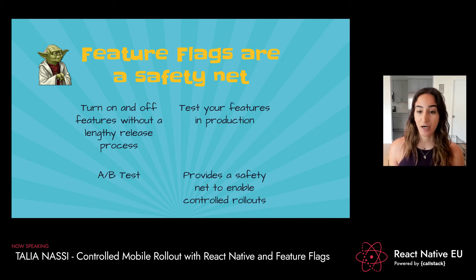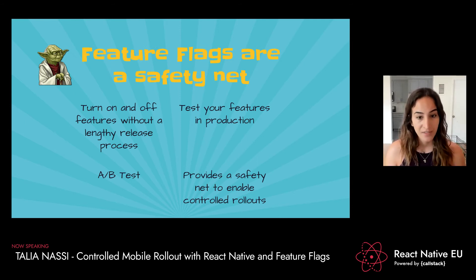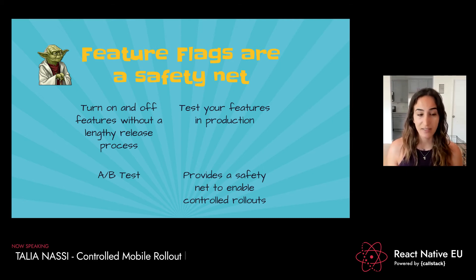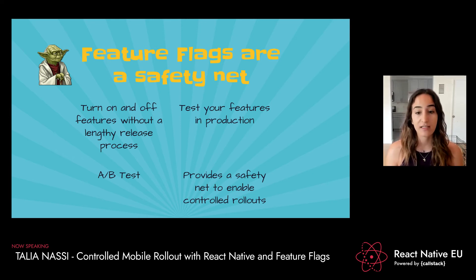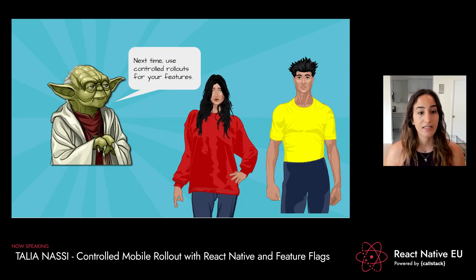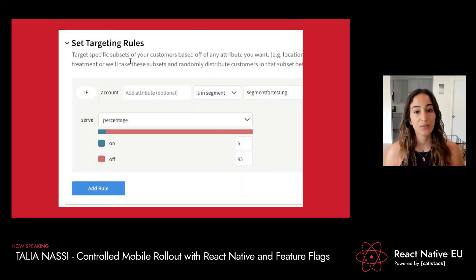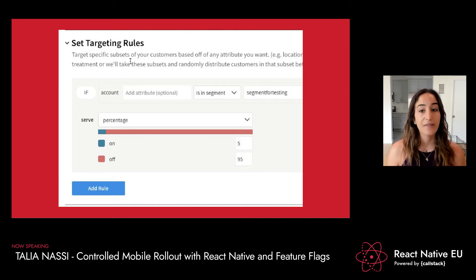Debbie's team can control the rollout for the barcode feature — rolling it out to 5% of users to make sure it works, and if there are any bugs, rolling the feature back. They can also A/B test to see whether users with the feature spend more money, or how it affects iOS versus Android users performance-wise. With feature flags, you get an extra layer of risk mitigation in case something goes wrong. Yoda advises them to use controlled rollouts next time, and that's exactly what Debbie and John do — using controlled rollouts to mitigate risk whenever they release a feature.